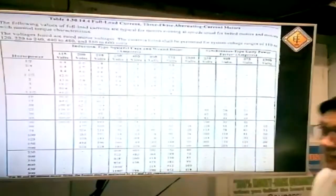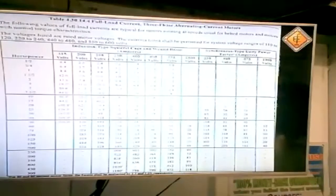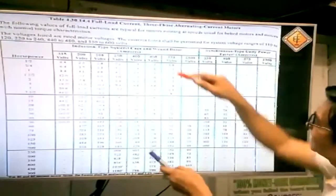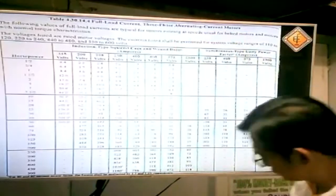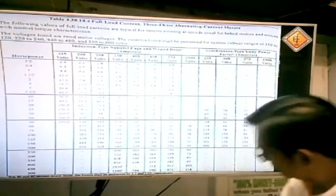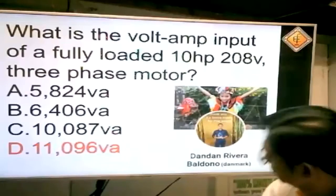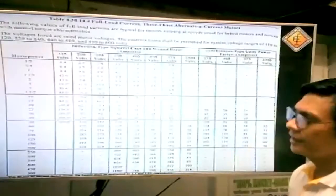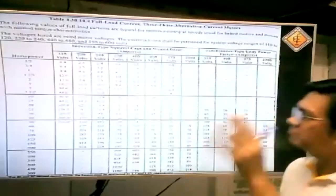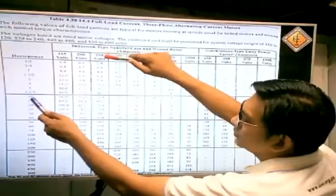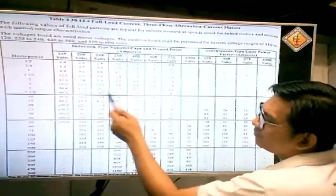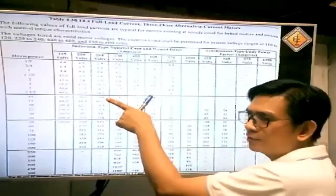55 amperes. Sa 208 volts, 55 amperes. Puta tayo sa 3-phase mga kawerpa ha. Medyo bibilisan ko lang kasi marami pa tayong gagawin eh. Hindi ko alam kung maabot pa tayo sa substation. Sige. Tingnan natin ito. 208 volts. Anong sabi? Ilan volt ulit? 208 volts, no?